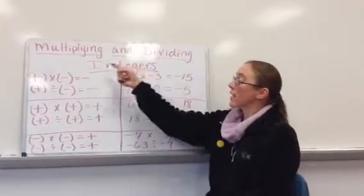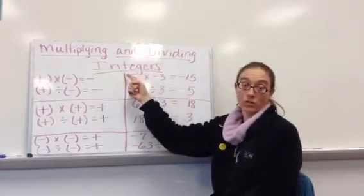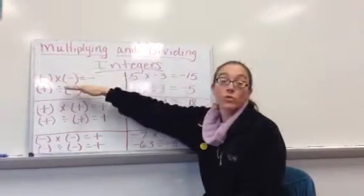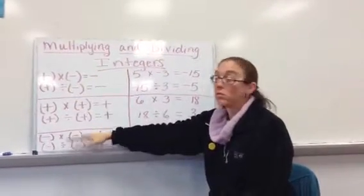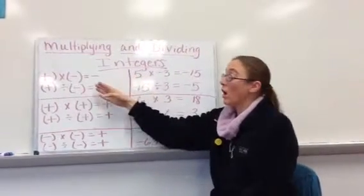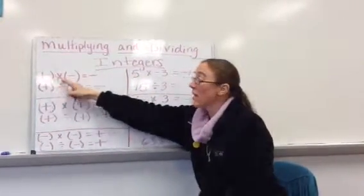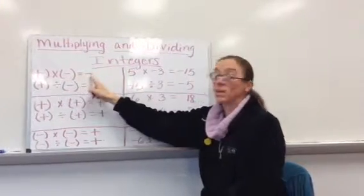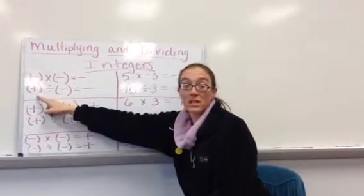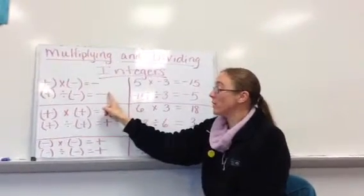Today we're talking about multiplying and dividing integers. The rules you need to think about: a positive times a negative is going to give you a negative, and a positive divided by a negative is going to give you a negative.